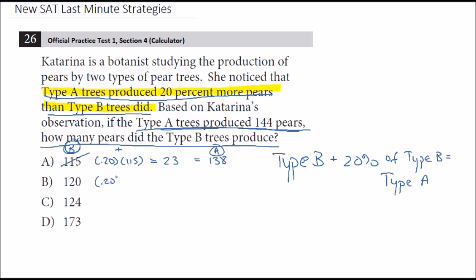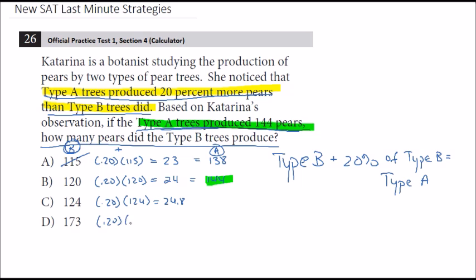Let's try 120. We take 20% of 120, which is 24. Then we add 120 and 24 and get 144 — which matches the type A production. As for the other choices: 0.20 times 124 is 24.8, and 0.20 times 173 is 34.6. The 173 answer doesn't make sense anyway because type A produced more pears, so type B couldn't be 173, which is greater than 144. In both remaining cases, we end up with 148.8 — nonsense because you can't have 0.8 of a pear.